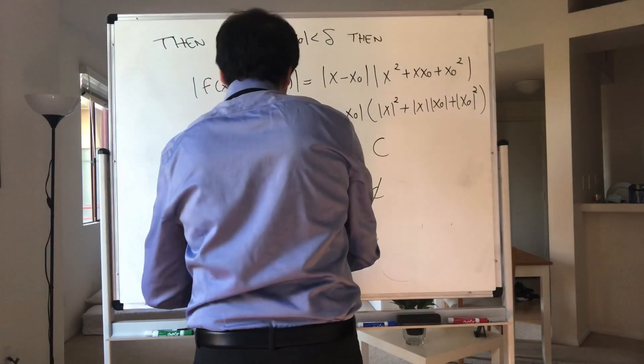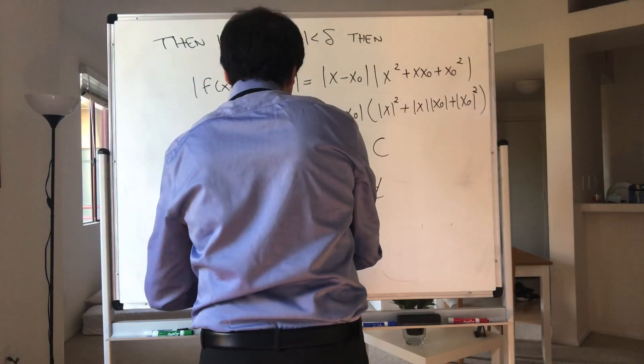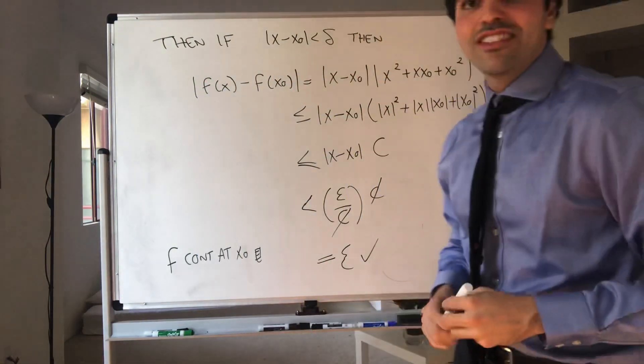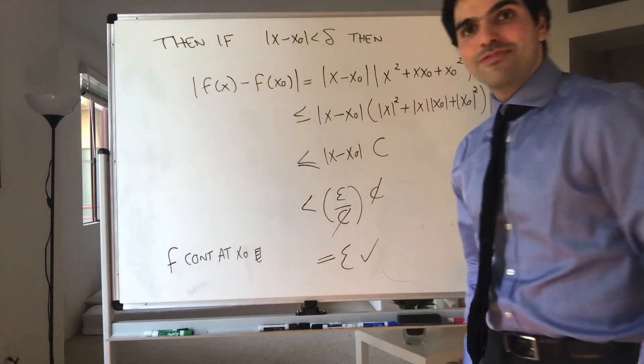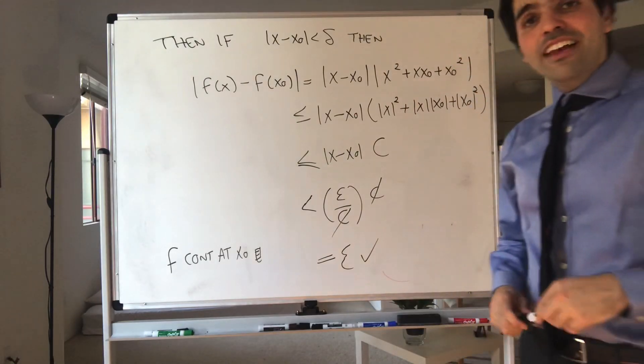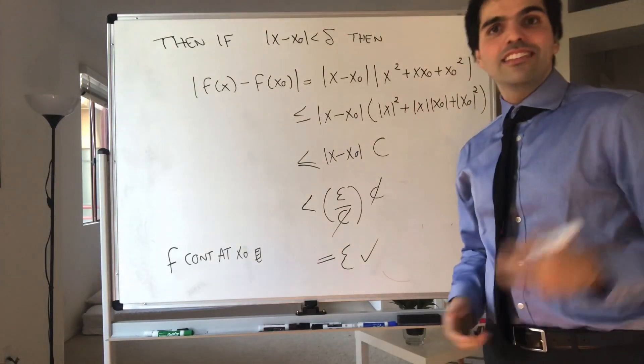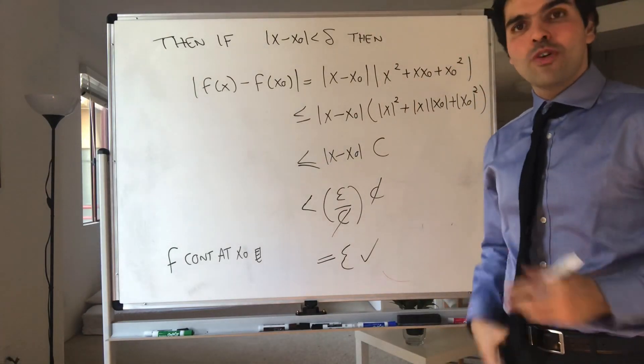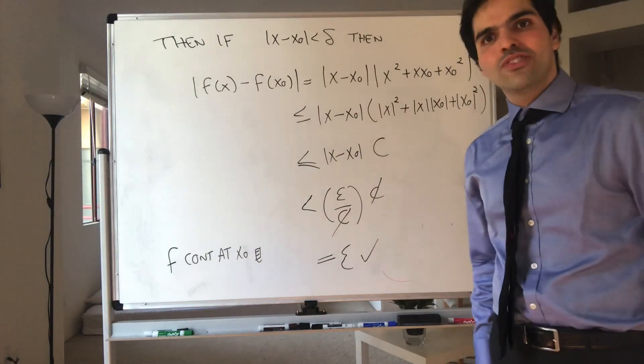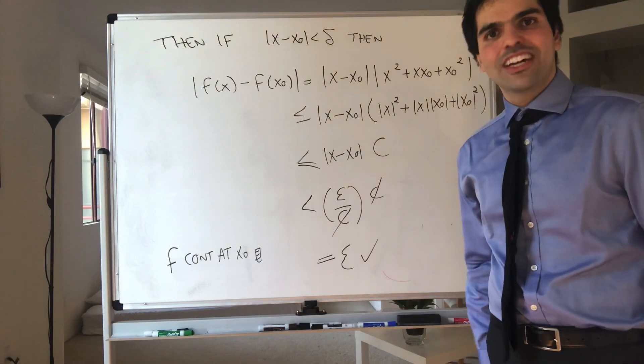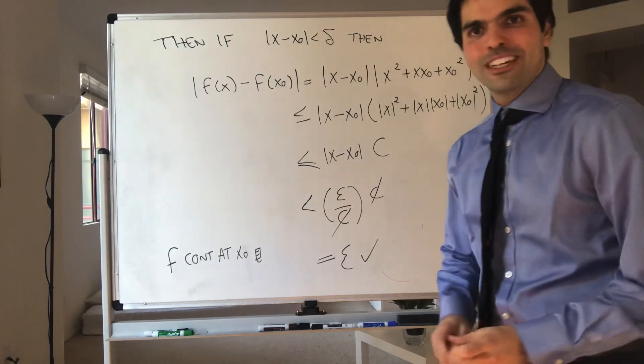And since x naught was arbitrary, we do get that f is continuous everywhere. I hope you liked this. If you want to see more math, please make sure to subscribe to my channel. Thank you very much.